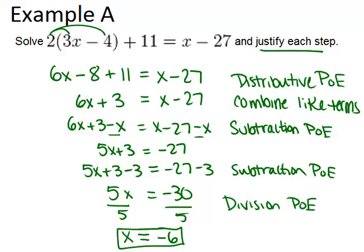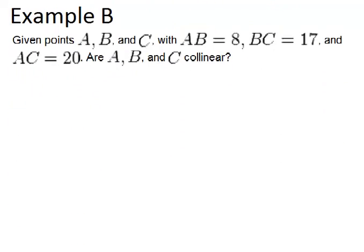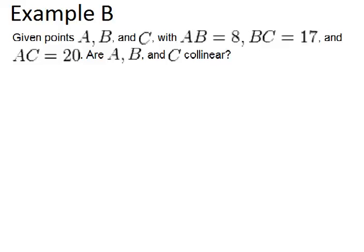All right, let's look at example B. In this example, it says, Given points A, B, and C, with AB equal to 8, BC equal to 17, and AC equal to 20, are A, B, and C collinear.